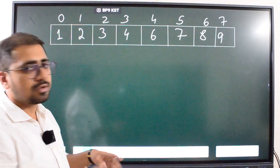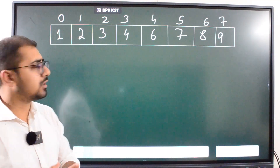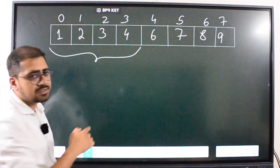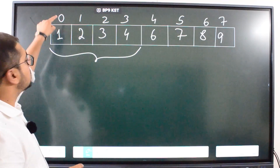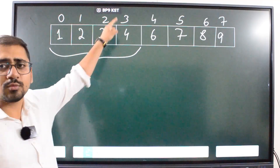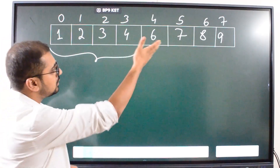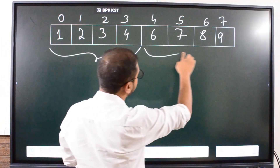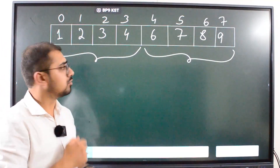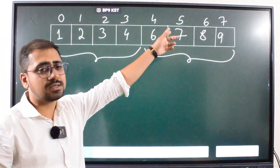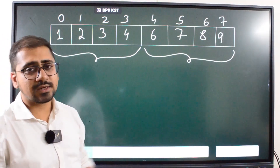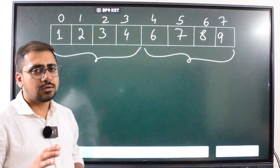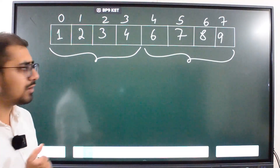Here is the logic. For numbers 1 to 4 and their indices, the difference between value and index is always 1 (1−0=1, 2−1=1, 3−2=1, 4−3=1). But after the missing 5, the differences become 2 (6−4=2, 7−5=2, 8−6=2, 9−7=2). So if the difference is 1, the missing number is on the right; if it is 2, the missing number is on the left.